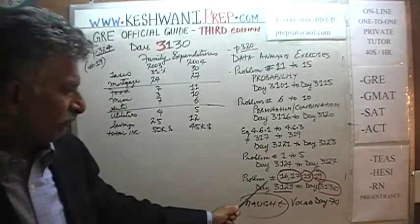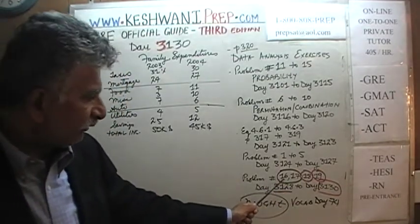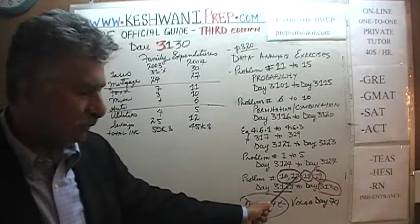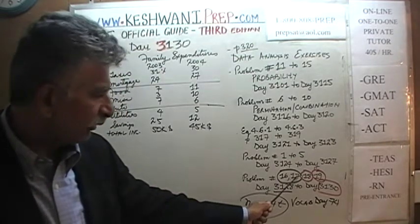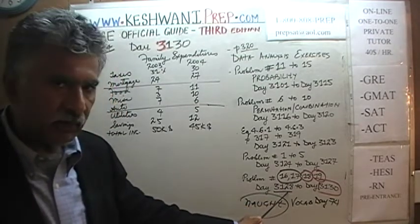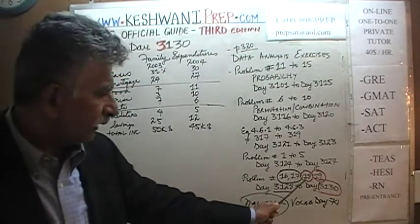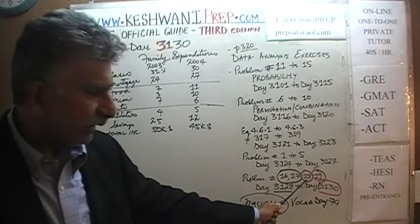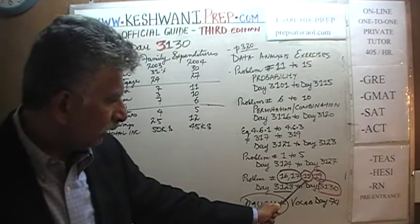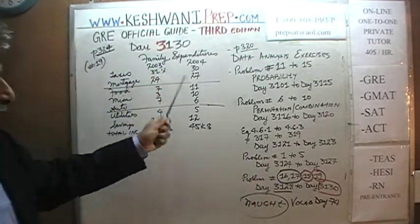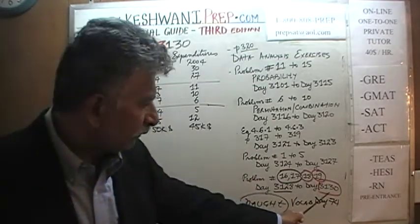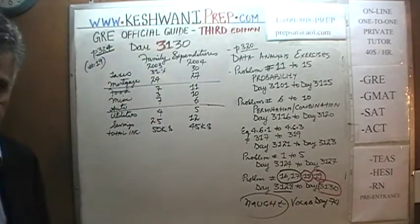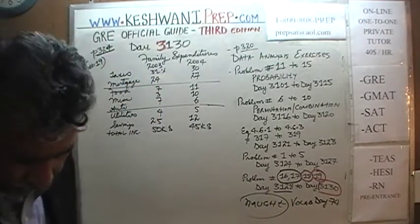Finally, the last four problems: 16, 17, 18, and 19. Problems 16 and 17 were done on day 3128 — the day before yesterday. Yesterday we did problem 18, and today on day 3133 we will do the very last problem. Do you understand? Let's keep going.